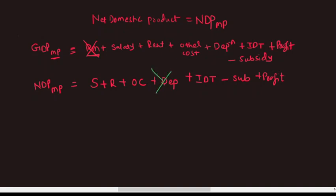Depreciation will be removed and it will become NDP at market price. So net domestic product at market price is nothing but GDP at market price - we are just removing depreciation. The logic of removing depreciation is very simple. Depreciation is a charge of capital asset which we are charging in our market price.